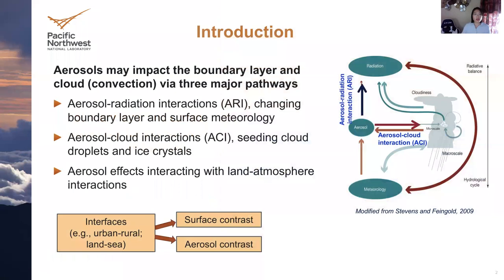Aerosols can impact the boundary layer and cloud connections through three major ways. The first is aerosol-radiation interaction, so-called ARI. This is mainly through changing the radiation temperature and feeding back to meteorology in the boundary layer and surface. The second is aerosol-cloud interaction, ACI. This is about aerosols seeding cloud droplets and ice crystals, which will change clouds, feed back to radiation, and change precipitation. All of those also feed back to meteorology.